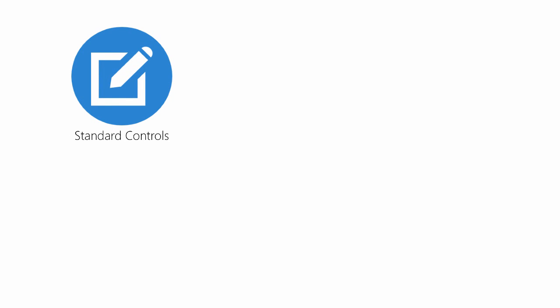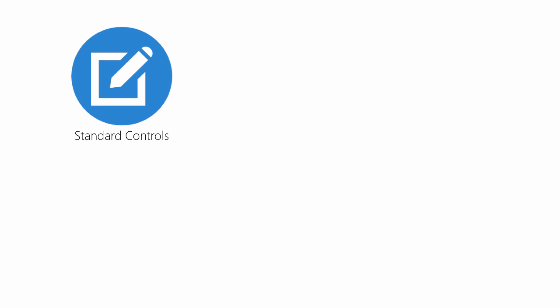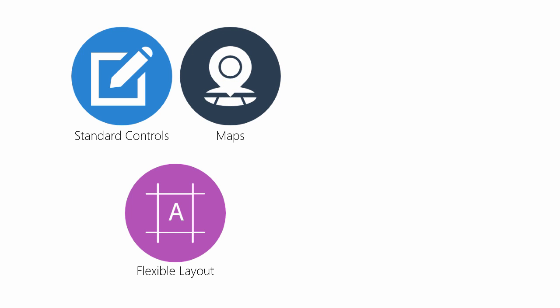Xamarin Forms provides support to build fully interactive user interfaces by including support for a standard set of controls — things you're used to, such as buttons, edit fields, labels, pickers, sliders, and even scrolling lists. It also has a flexible layout system which lets you position elements on the screen in an adaptive fashion, so your UI resizes based on the device it's running on. Where the platform supports it, Xamarin Forms includes support for basic maps. It also has several navigation patterns, including master detail, stack navigation, tab navigation, and page style navigation.